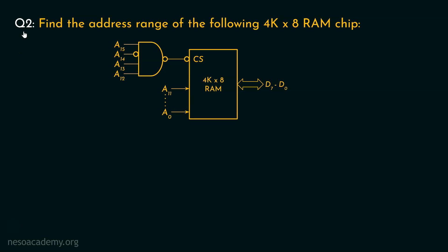Let's now focus on the next question. Find the address range for the following 4K by 8 RAM chip. So, let's try to solve it. Now, in this question, we haven't been given any decoder. It's only the RAM chip.